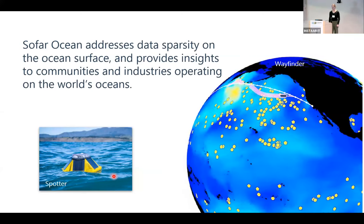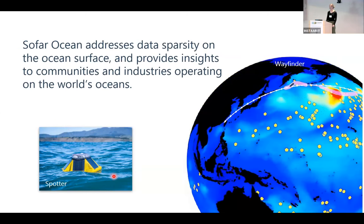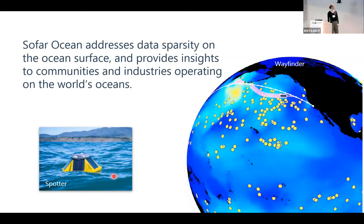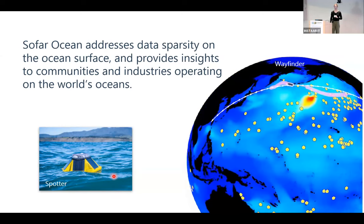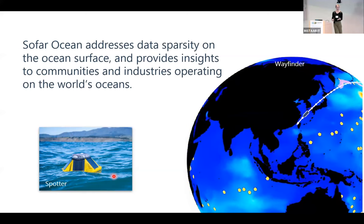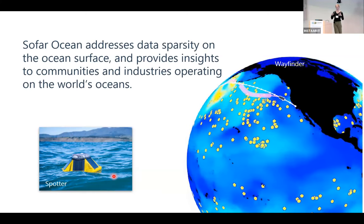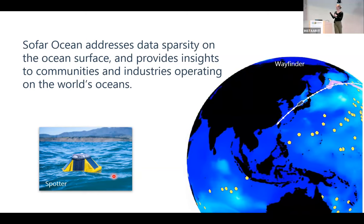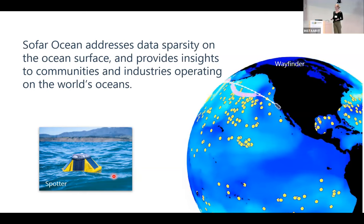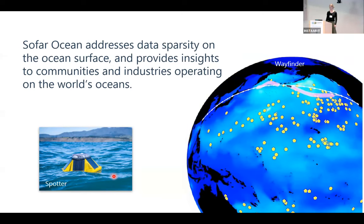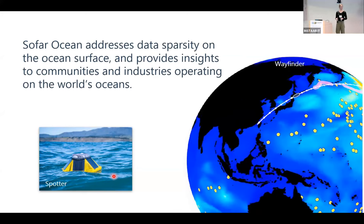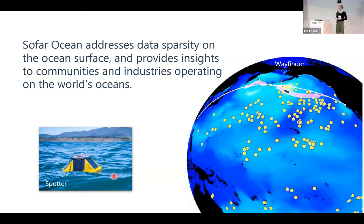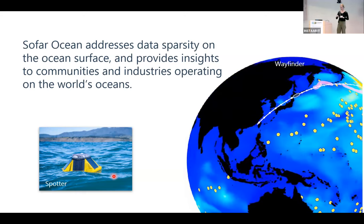SOFAR Ocean is on a mission to address data sparsity across the ocean surface and provide insights to communities and industries operating on the world's oceans. We're really interested in characterizing and observing the sea state — wave conditions across the global oceans — and we do that through a full stack approach. That means we're interested in building instruments and tools to observe wave conditions. The bottom of our stack is a small buoy called the Spotter wave buoy — a basketball-size, solar-powered wave buoy that measures directional wave characteristics, observing how energy is distributed across frequencies and directions. It's free-drifting, and we have about 500 of these in the global oceans right now.